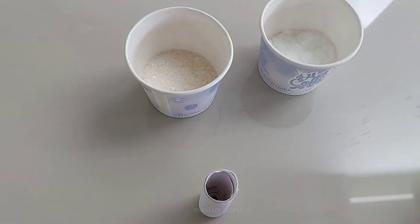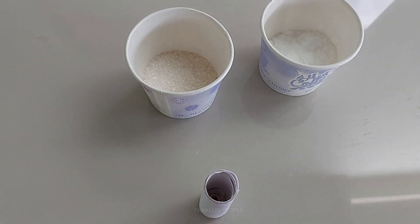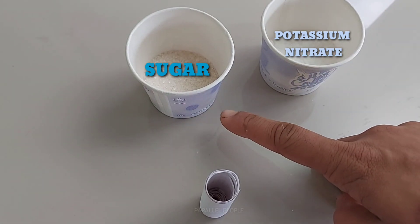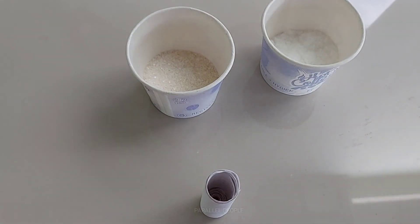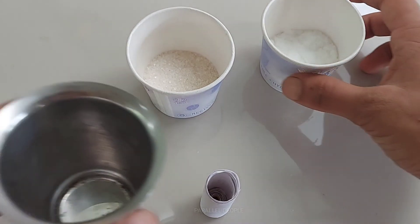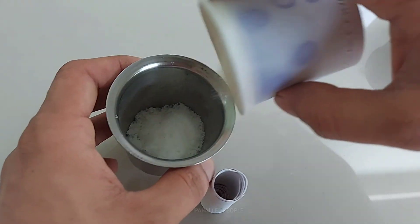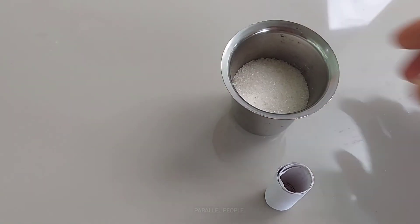For the propulsion of the rocket, we need a fuel and oxidizer. Here we are taking sugar as fuel and potassium nitrate as an oxidizer. We need a 50-50 mixture, so equal amounts of sugar and potassium nitrate. Just mix these two ingredients in a glass or something that can withstand heat.